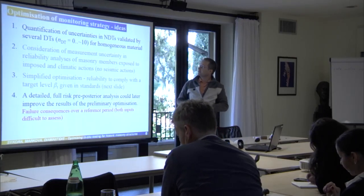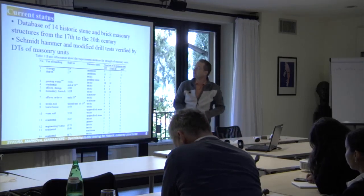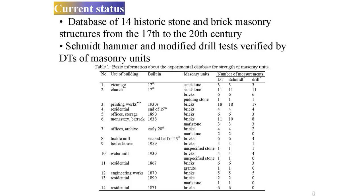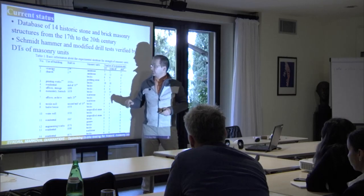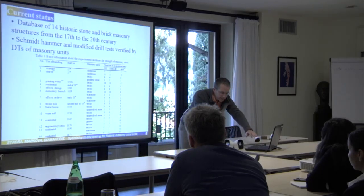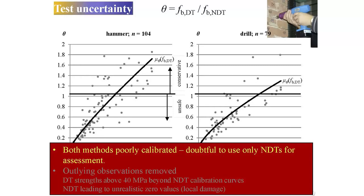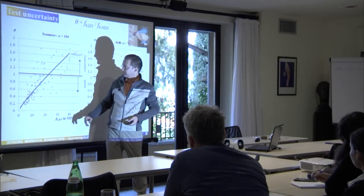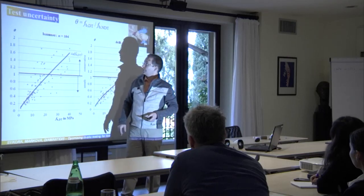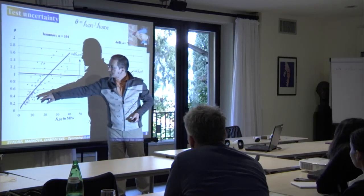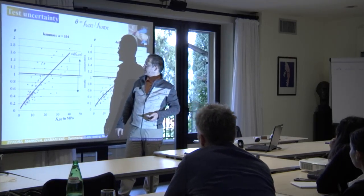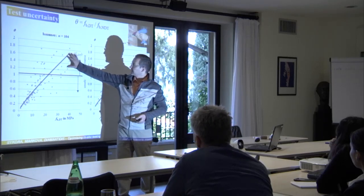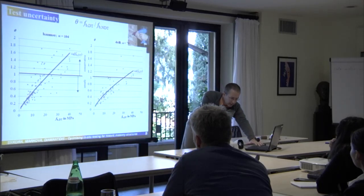We get a database where, for historic materials, we have a comparison between non-destructive test results and destructive test results — two methods, 100 results for the first and 80 pairs of results for the second. We also have general information on test uncertainty. From this graph, on the horizontal axis we have compressive strength of the masonry unit obtained by press — a destructive test. On the vertical axis we have test uncertainty of the non-destructive technique. It is poorly validated: for low strength you get unsafe estimates; for higher strength you get safe estimates when using non-destructive tests.